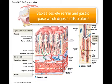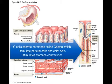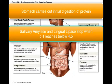Babies also have renin and gastric lipase produced in the stomach, important for milk digestion; these are not produced in adults. The stomach also secretes a hormone called gastrin, produced by G cells in the gastric pit, which stimulates both parietal and chief cells and promotes gastric wall contractions to mix contents. D cells release somatostatin, which inhibits gastrin release. The stomach carries out only initial protein digestion, while salivary amylase and lingual lipase continue until the pH drops below 4.5, and pepsin activity strongly increases as pH drops to 2.0.